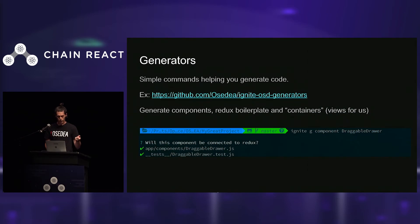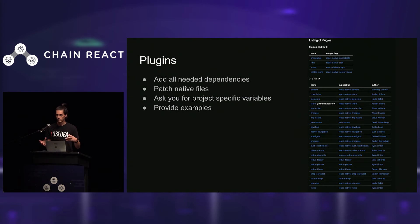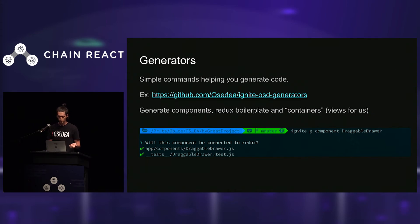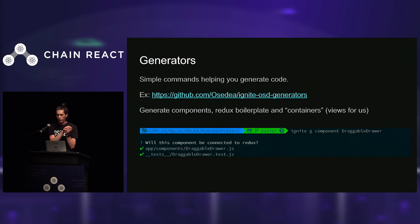Another thing it can do is remove that capability. So you can decide, in the end, to do a search instead of having a map displaying pins. With Ignite, you can remove all of these dependencies and that code easily. Another thing that Ignite provides is generators. The generators are simple commands that you can run to generate code. We open source our generators at Ozydia and I'm going to take them as an example. With our generators, we can generate components, Redux boilerplate, and containers — we call them views — which are the higher order components you plug into your navigation system.